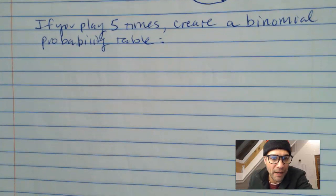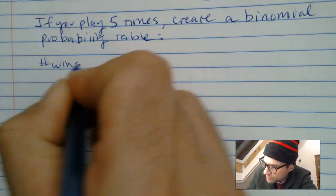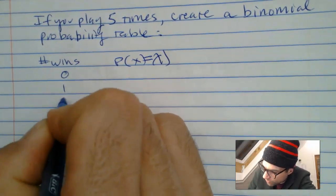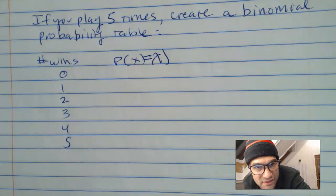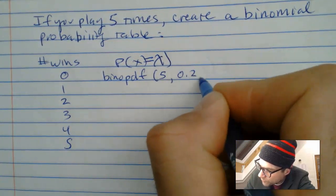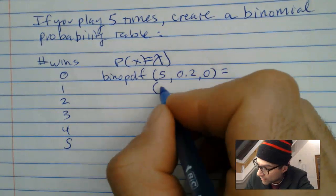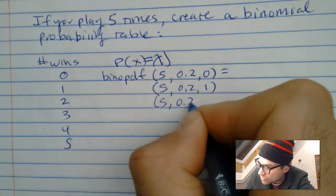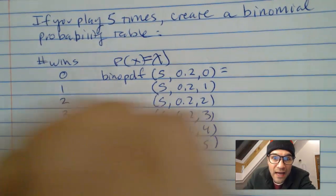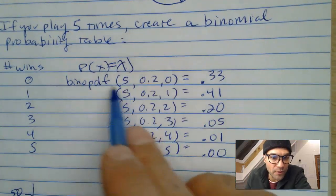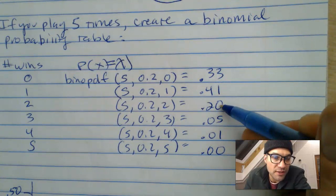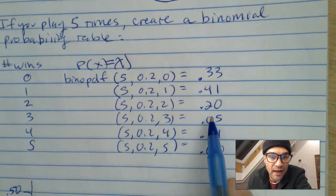If you play five times, create a binomial probability table with the number of wins — 0, 1, 2, 3, 4, or 5 — and the probability of getting those wins using Bino PDF. You're playing five times, the probability of winning is 0.2. Filling out the table: there's a 33% chance you don't win at all, 40% chance you win exactly once, 20% chance you win twice, only 5% chance you win three times, and so on.